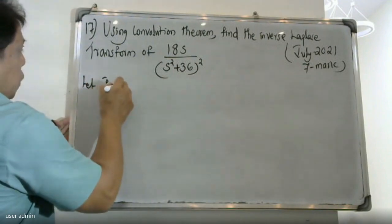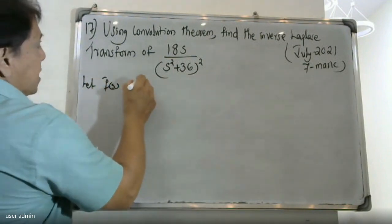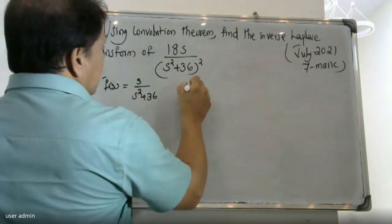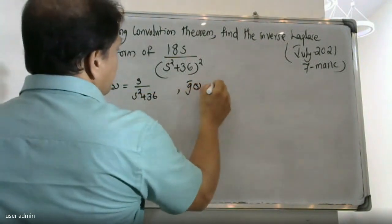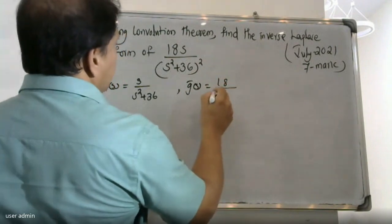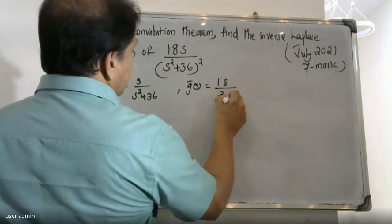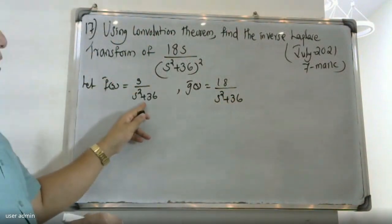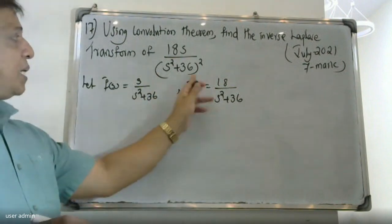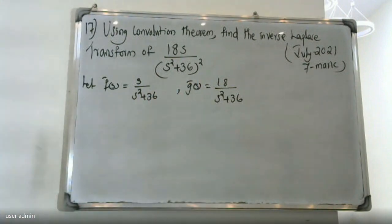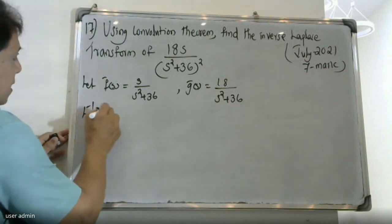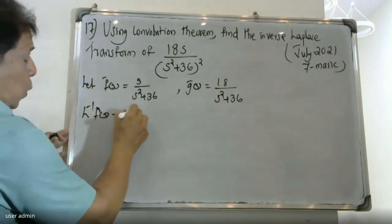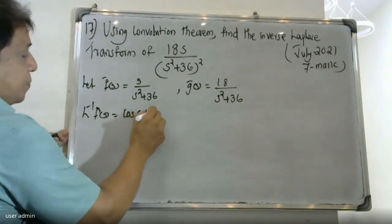f bar is equal to s by s squared plus 36. g bar is equal to 18 divided by s squared plus 36. s squared plus 36 is s squared plus 4 squared. The inverse Laplace of f bar, which is s over s squared plus 36, gives us cos 6t. This is the value of f(t).